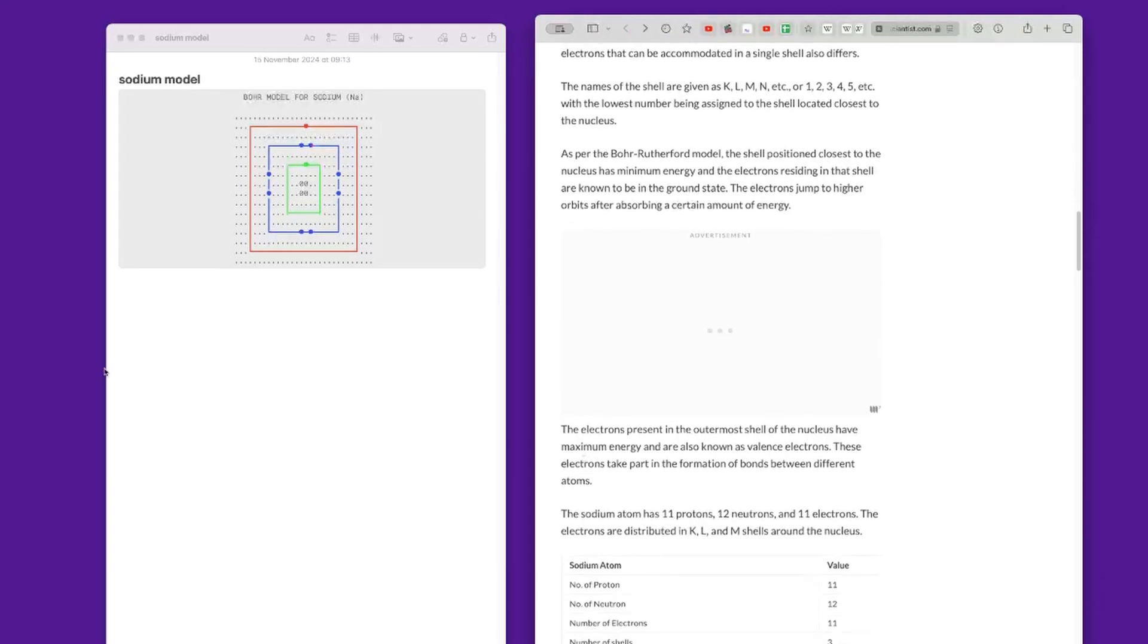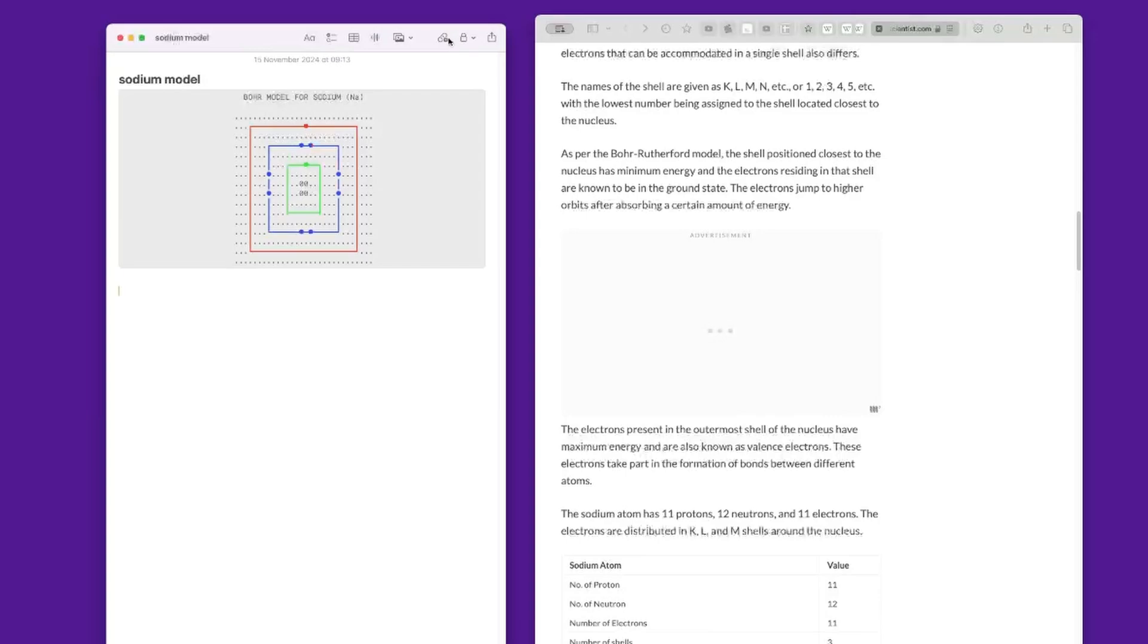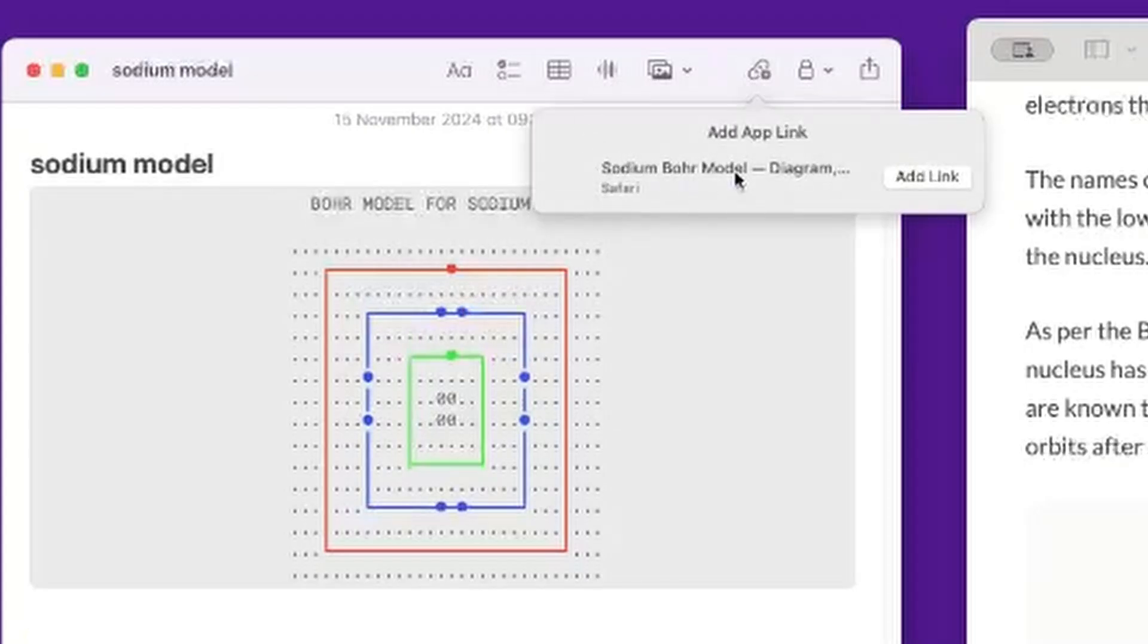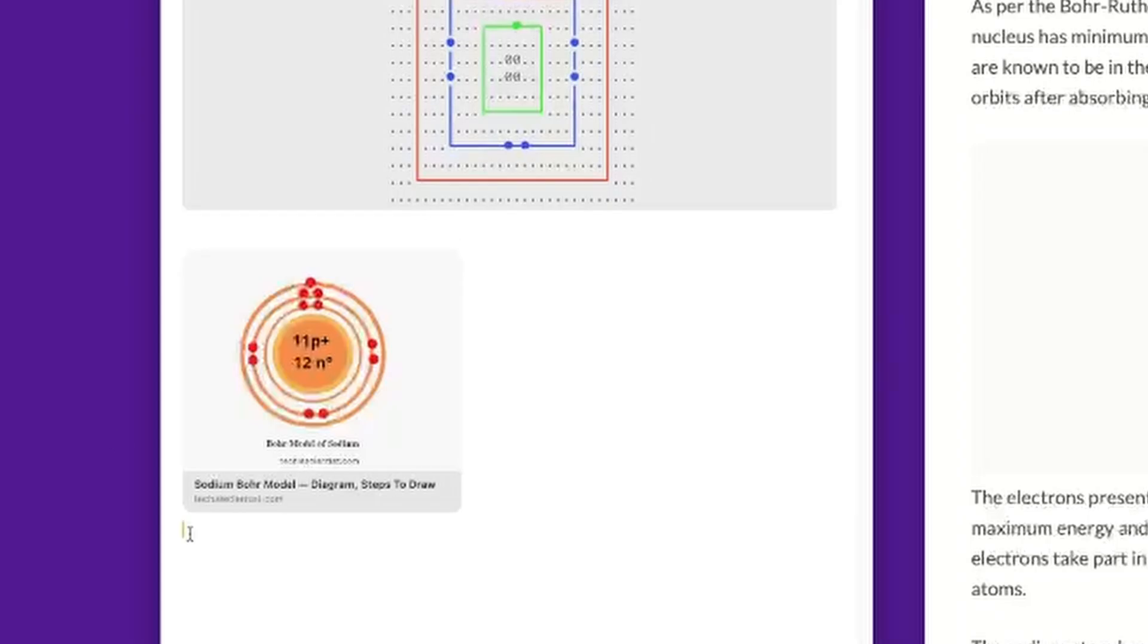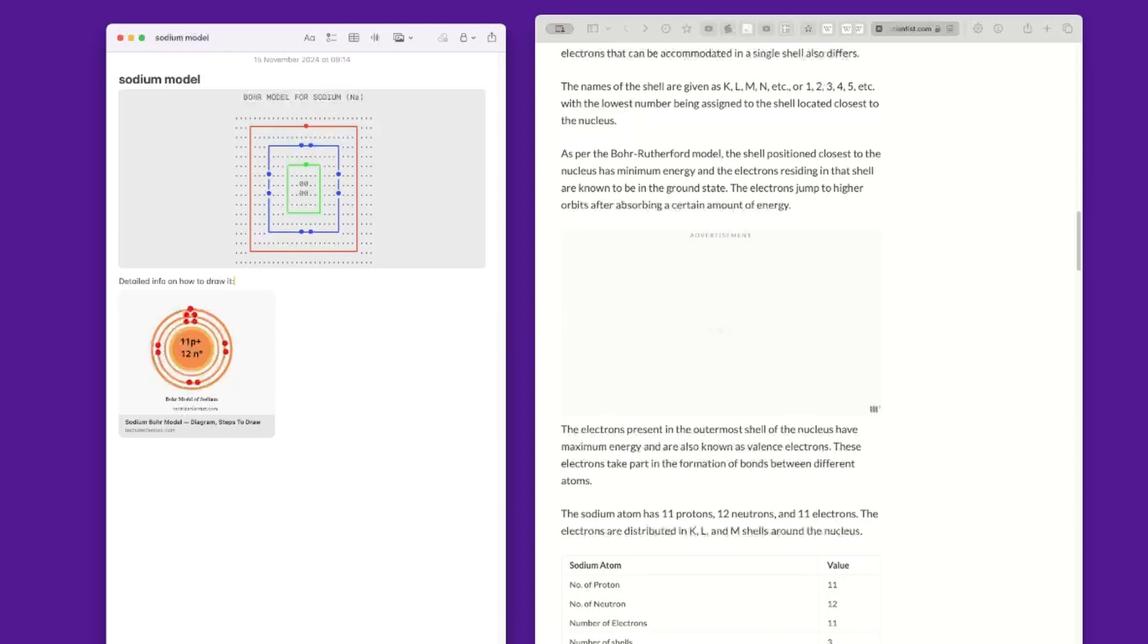This is useful information for me and what I could do could be to create a link to this page by clicking on this button. As you can see the page that I'm on is here and I can add a link to this page. When I do it it basically acts as a bookmark and I can take notes on this by saying for example 'detailed info'.